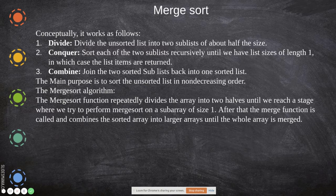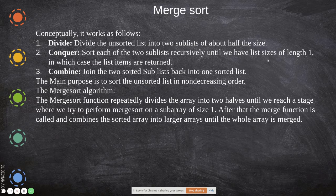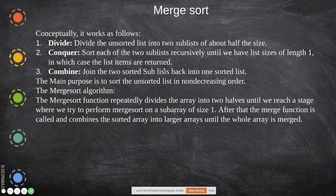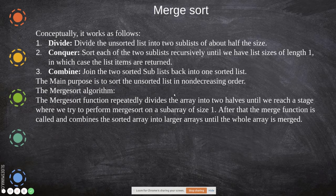So this is what merge sort does: divide the unsorted list into two sublists of about half the size. Conquer: sort each of the two sublists recursively until we have lists of size one. Combine: join the two sorted sublists back into one sorted list. The main purpose is to sort the unsorted list in non-decreasing order.